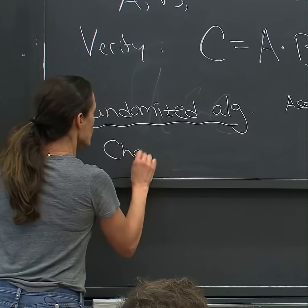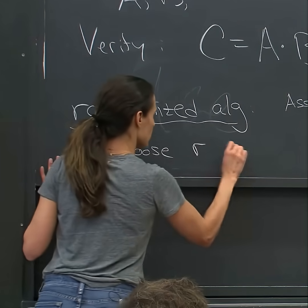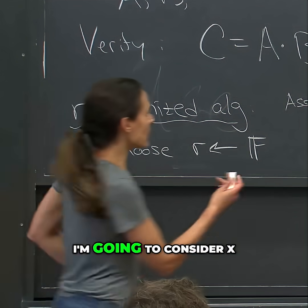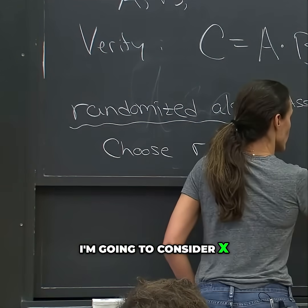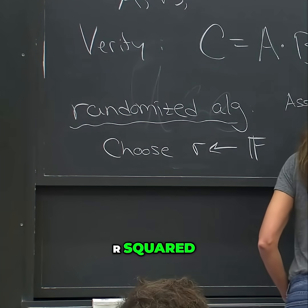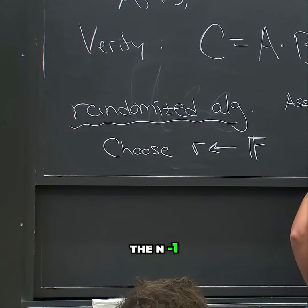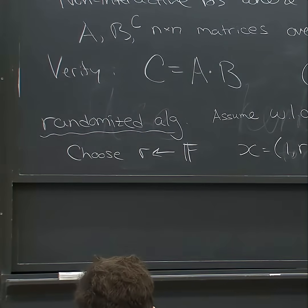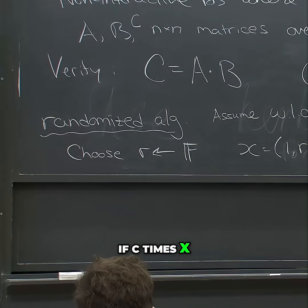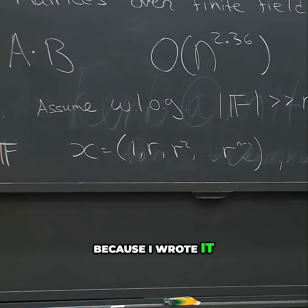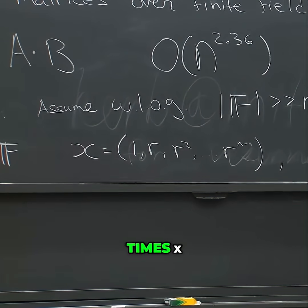What I'm going to do is choose a random element r in the field. I'm going to consider the vector x, which is just [1, r, r², ..., r^(n-1)]. And then I'm going to check if C times x transpose is equal to AB times x.